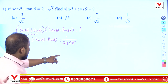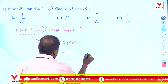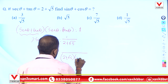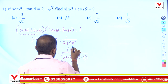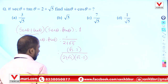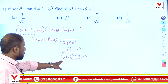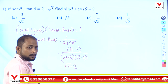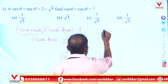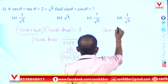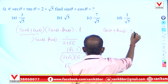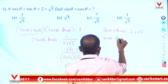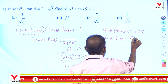If we multiply by the conjugate, 1/(2 + √5) becomes (√5 - 2) / ((√5)² - 2²) = (√5 - 2) / (5 - 4) = √5 - 2. So sec θ - tan θ = √5 - 2. We were given sec θ + tan θ = 2 + √5, and now we have sec θ - tan θ = √5 - 2.